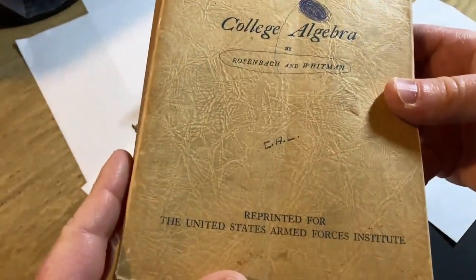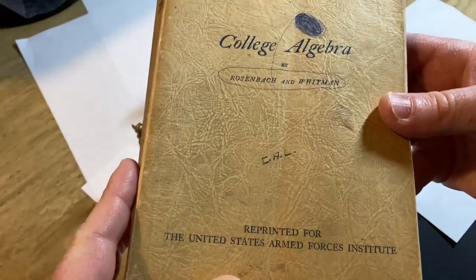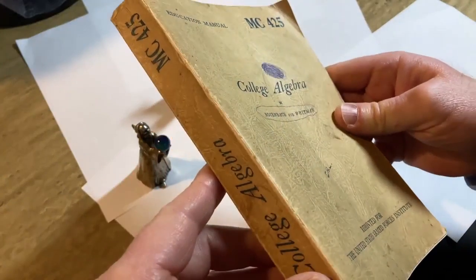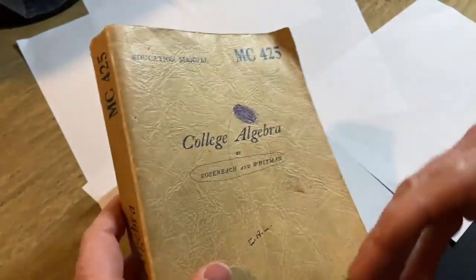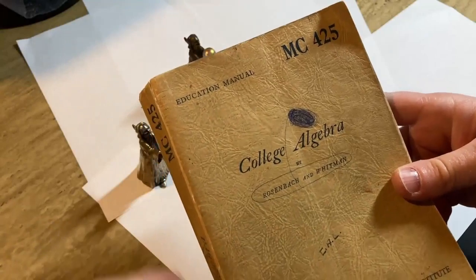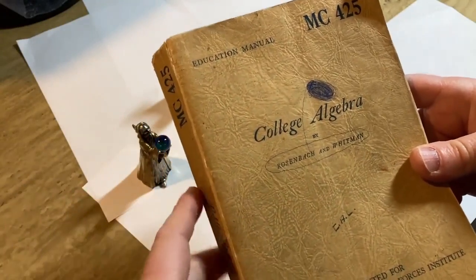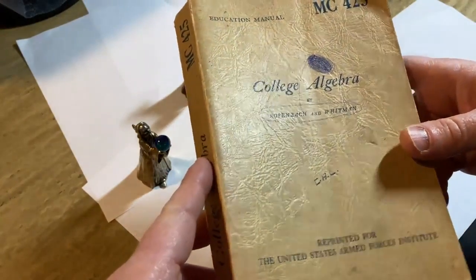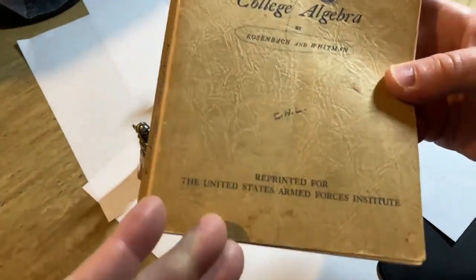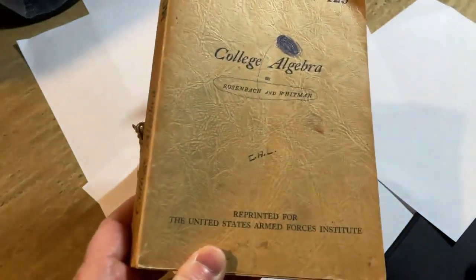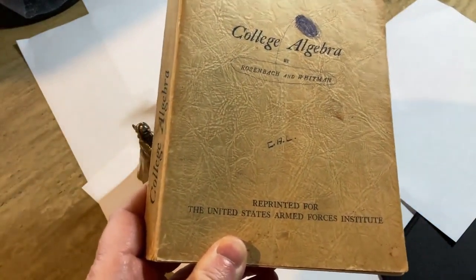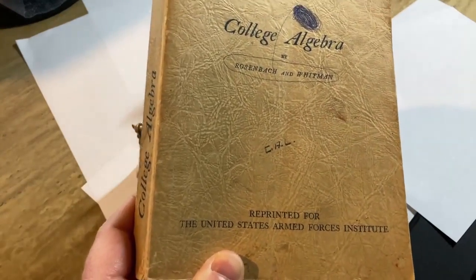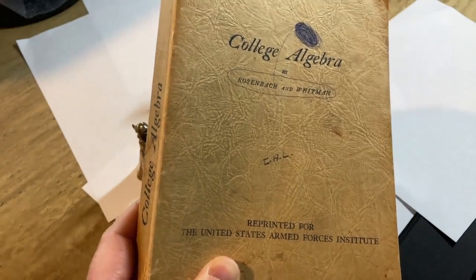So the United States Armed Forces Institute was founded in April of 1942 as the Army Institute and it survived for many years and for some reason it no longer exists. It was a place that provided educational services and testing to members of the United States Armed Forces Institute. And this applied to people in the U.S., Caribbean, Europe, Hawaii, and Japan. So it was a pretty big organization and it was headquartered in Madison, Wisconsin.